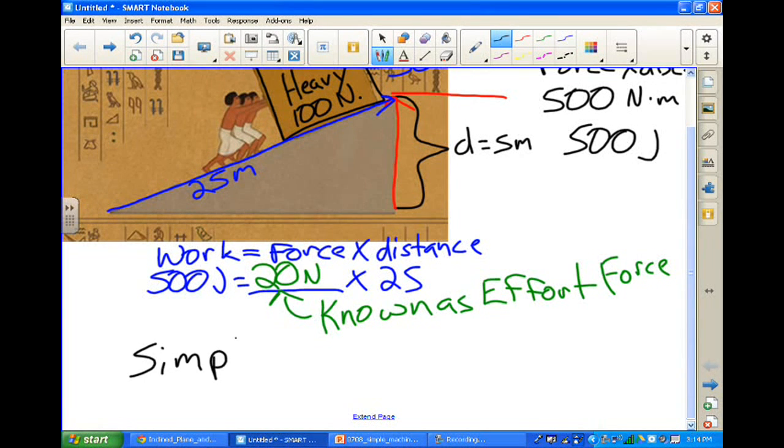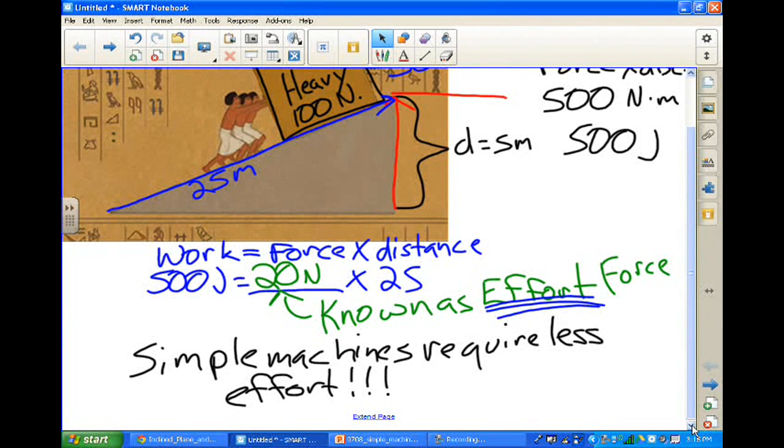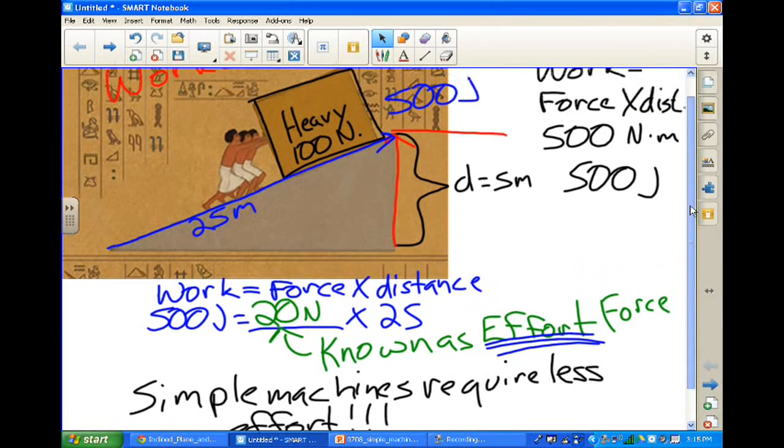So a simple machine really, in essence, takes less effort to move something, especially in this case of an inclined plane. The simple machine requires less effort, not less work. The work is still the same, it just requires less effort. And that's it. That's effort and work and force and simple machines. Thanks. Bye.